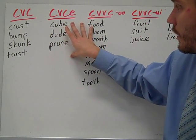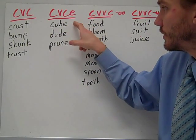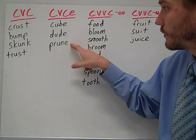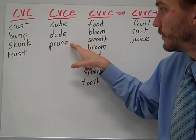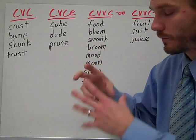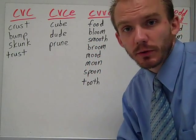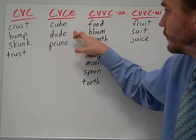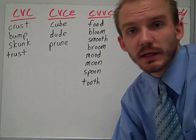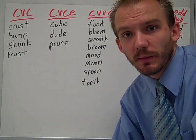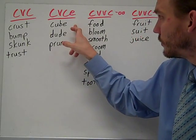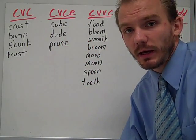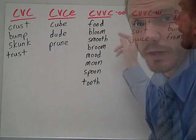Now the CVCe long U pattern. You have cube — that three-dimensional shape made out of squares. Dude, as in 'yeah man, what a cool dude.' And prune, that fruit that's purple and you have prune juice.